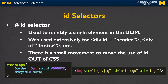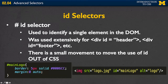In my HTML, I would put in my source, my alt tag, and also ID equals main logo. Then in my style sheet, using the pound symbol along with the ID name, the browser knows: whenever I see that image, I want to add this border and this margin.